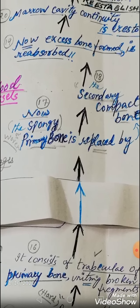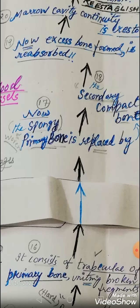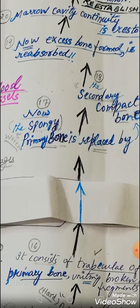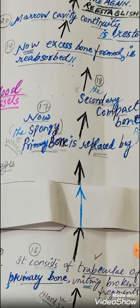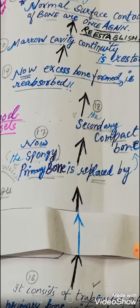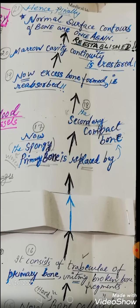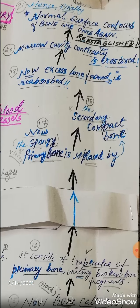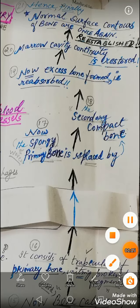Excess bone formation is then reabsorbed so that the marrow cavity continuity is restored, and finally the normal surface contour of the bone is once again re-established. This is how bone repair is completed.